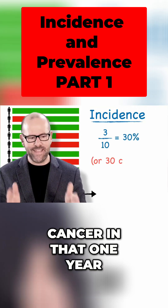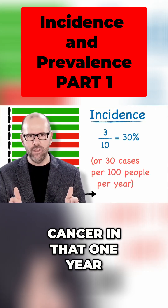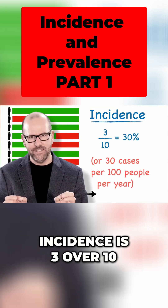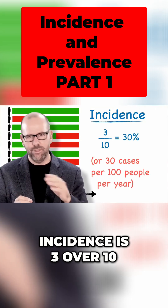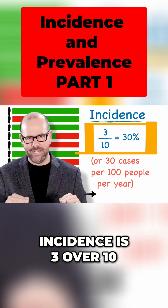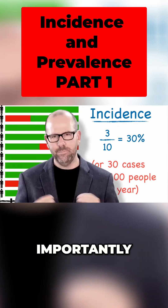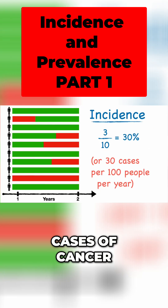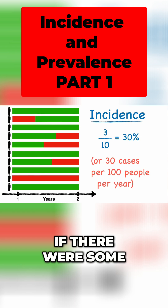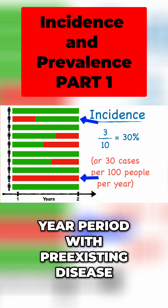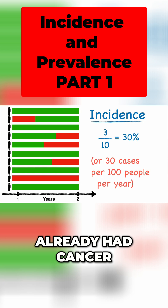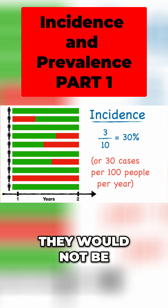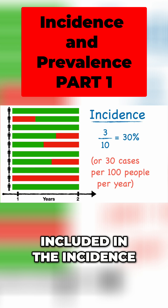Let's say three of them got cancer in that one year. We would say the incidence is 3 over 10, so 30%. Now, importantly, we're only counting new cases of cancer. In other words, of the 10 people, if there were some that came into that year period with pre-existing disease — they already had cancer — they would not be included in the incidence.